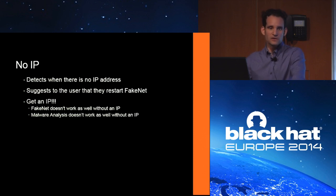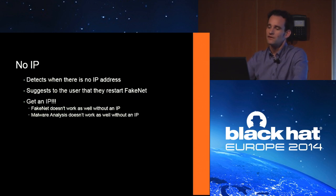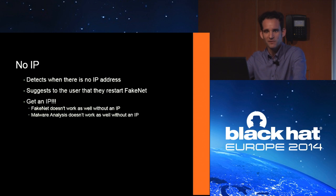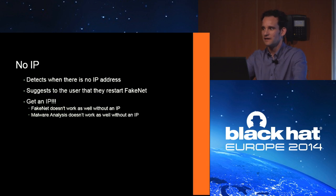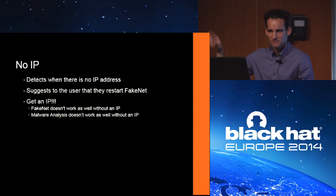The most common user error is not having an IP address or a proper network interface set up. In VMware, if you don't have the 'connected' box checked, there will be no network interface and FakeNet won't work. FakeNet detects if you have an IP address. Always have an IP address because not just FakeNet needs network connectivity — malware needs it too. VMware automatically has DHCP and can serve you an IP address — just check the box and you're good to go.